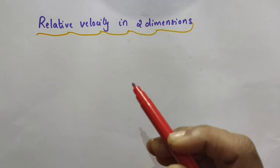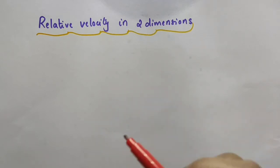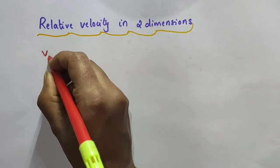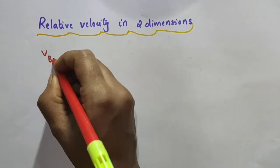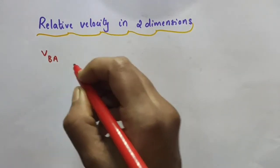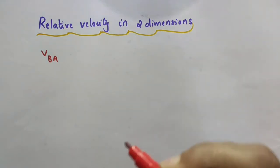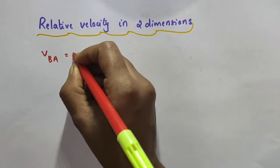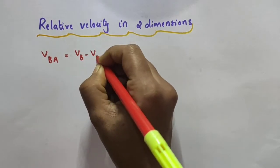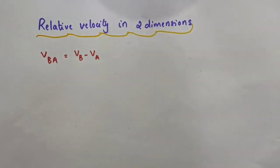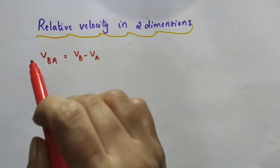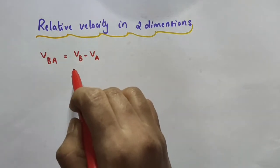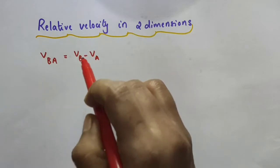While we discussed about the relative velocity, we got the expression for the velocity of object B relative to object A, with respect to some common frame of reference — that is, with respect to the ground — as VBA is equal to VB minus VA. That is, for motion along a straight line, we got the velocity of object B with respect to object A as velocity of object B with respect to the ground minus velocity of object A with respect to the ground.